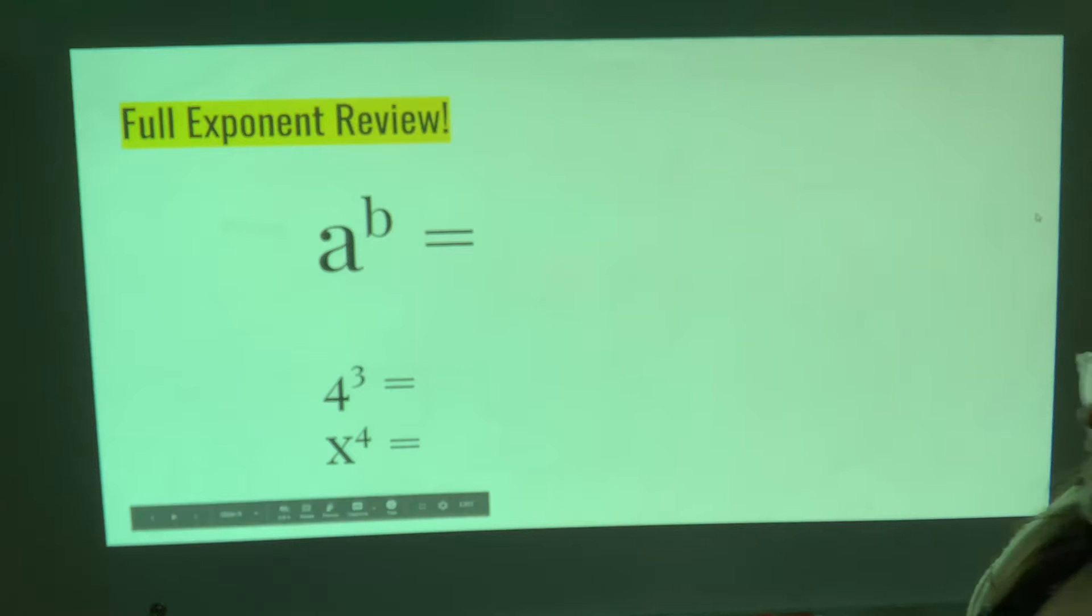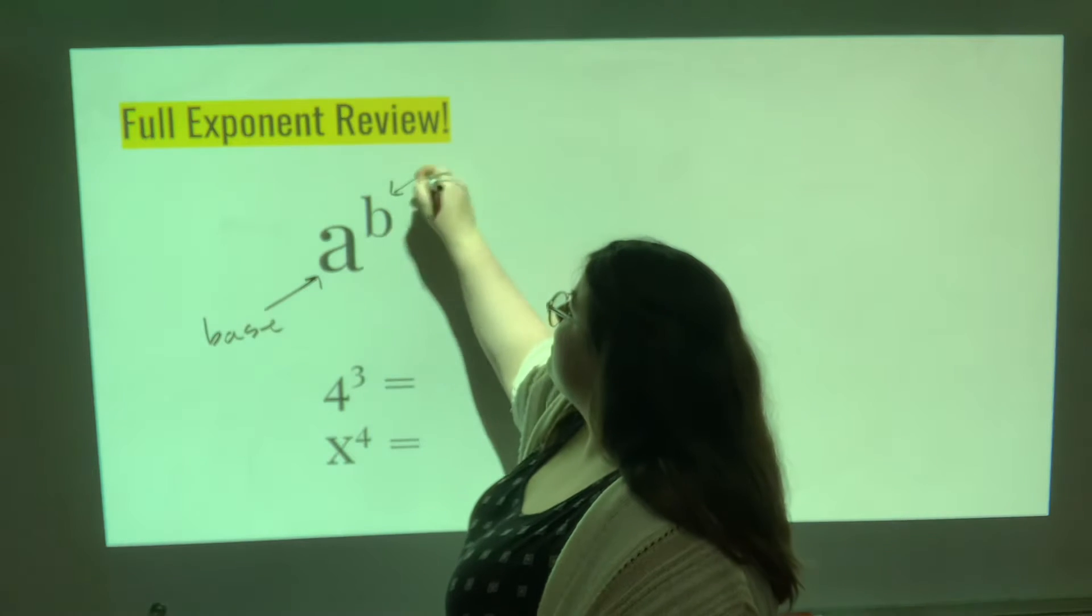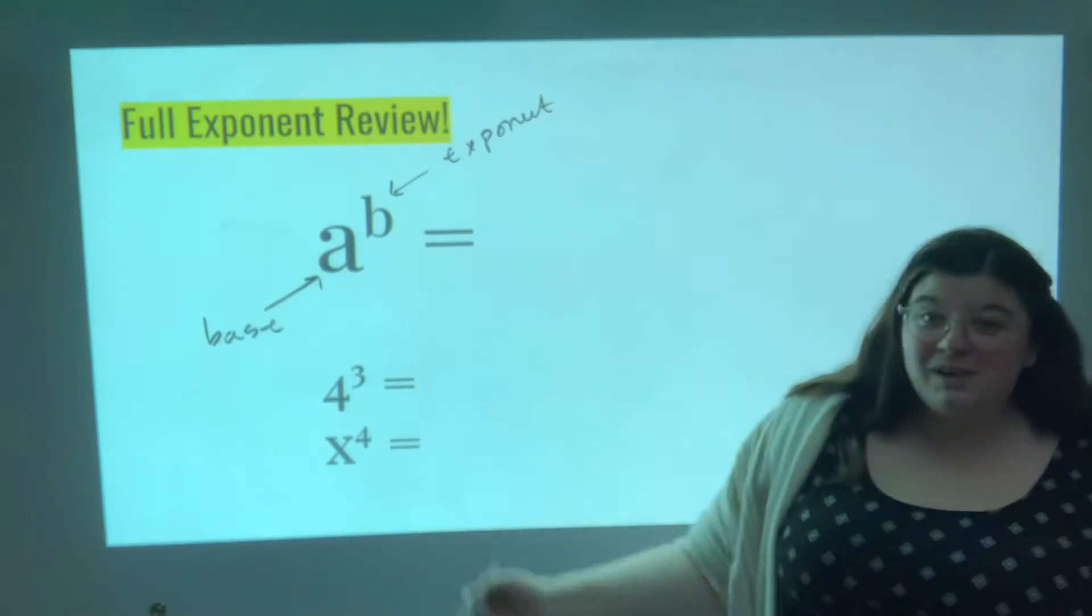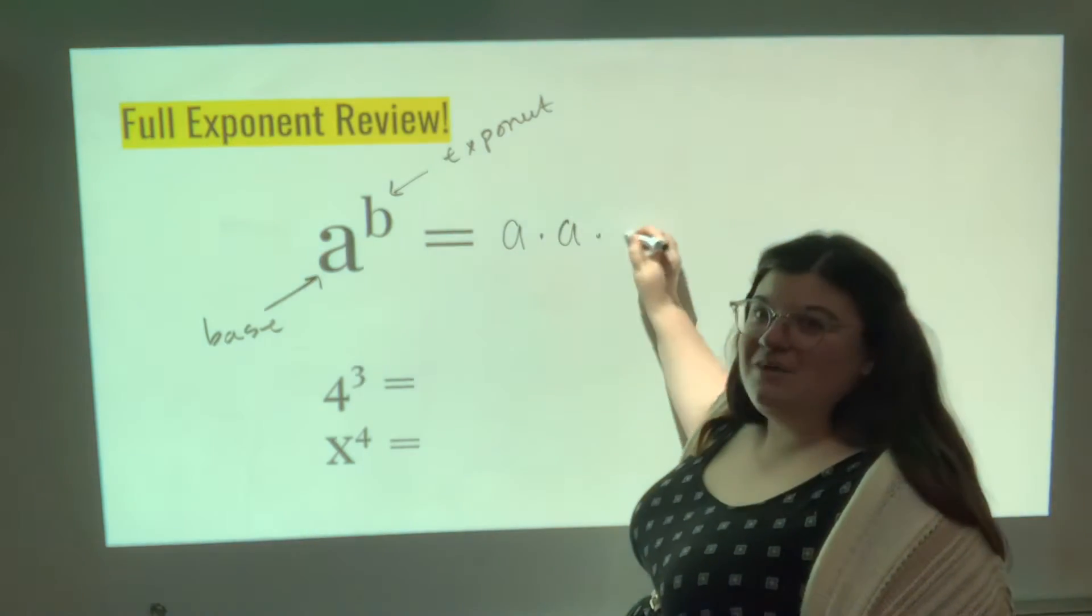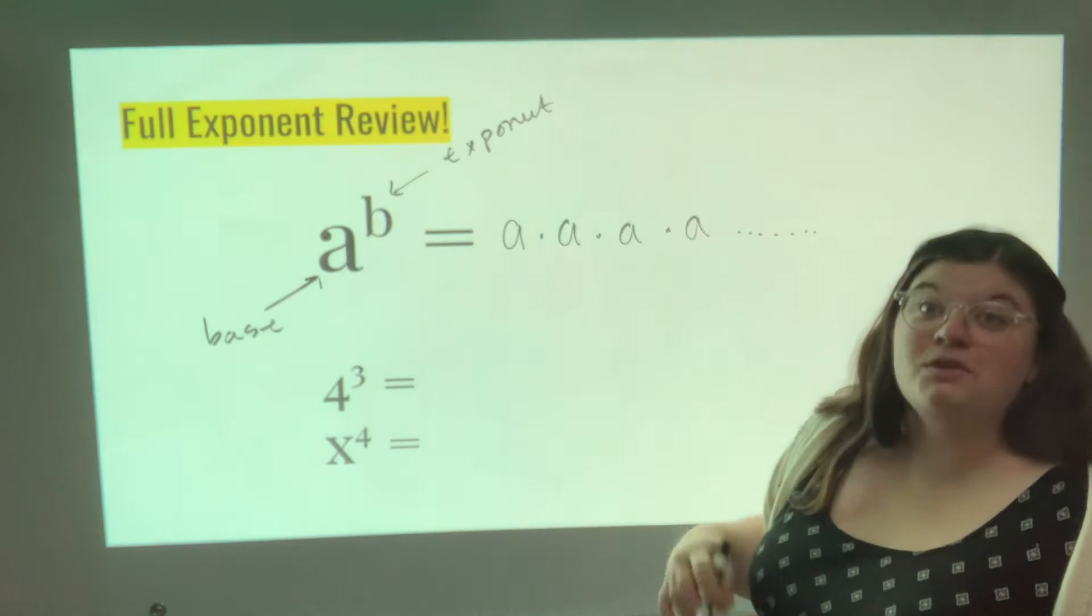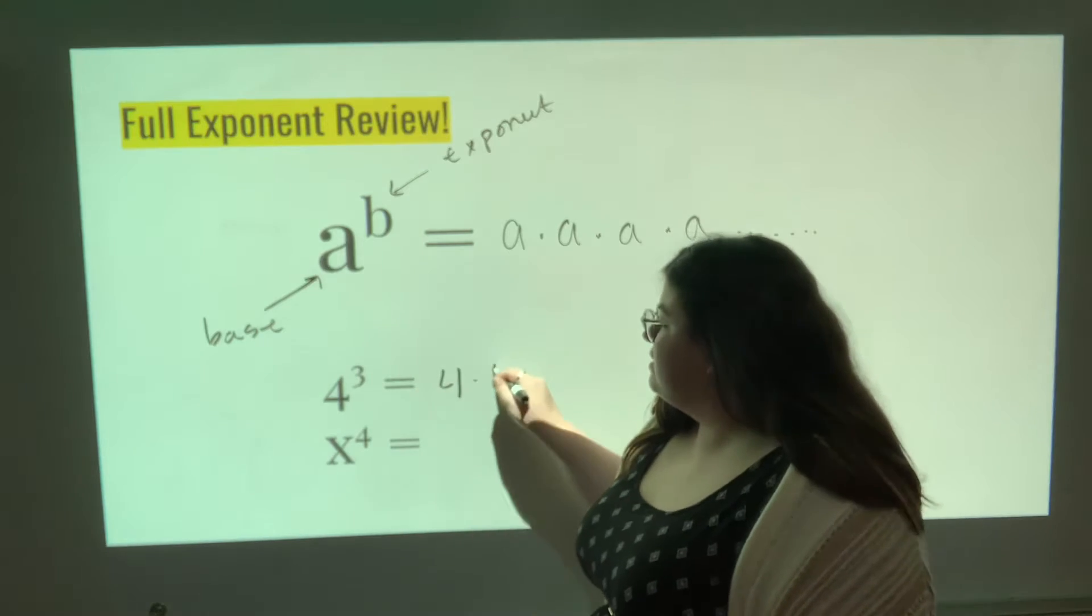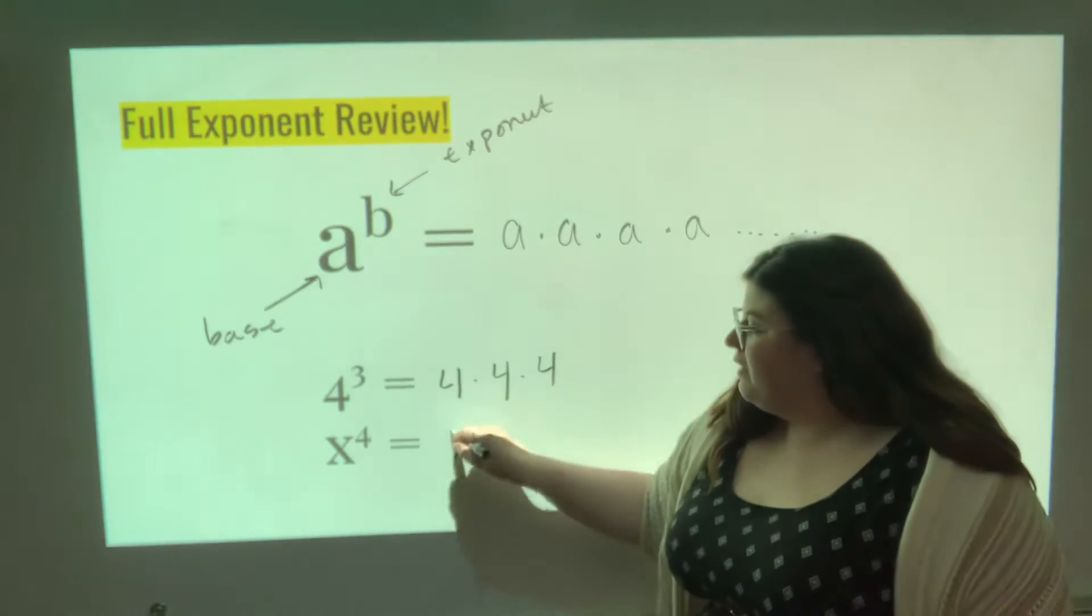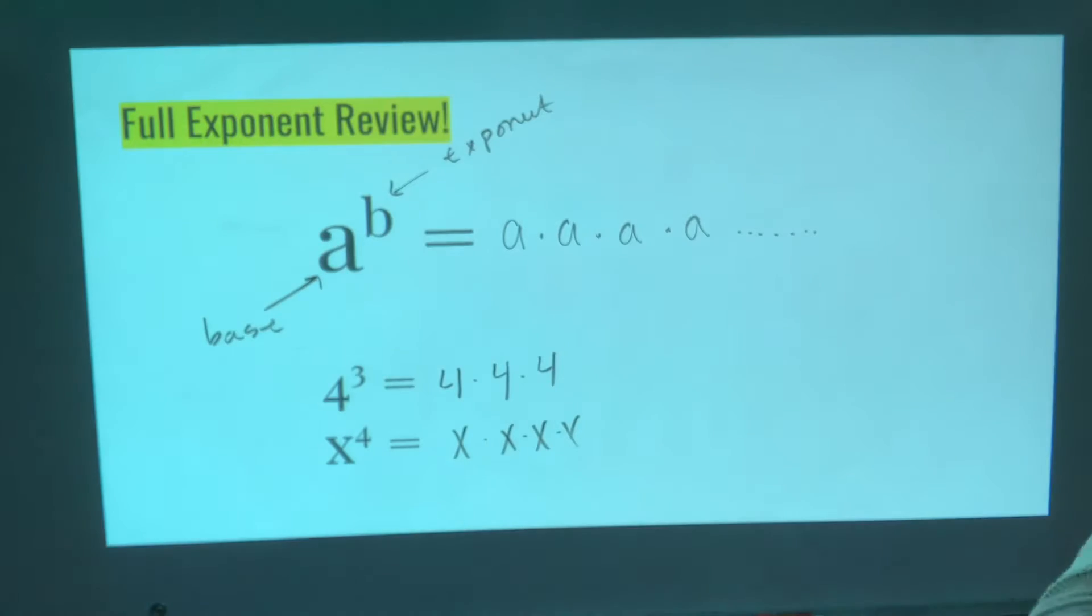Here's a quick exponent review. This is the base. This is the exponent. It tells you how many times to multiply that base. So a to the power of b is a times a times a times a, however many times b is. Maybe b is like 13, right? Then you multiply a 13 times. So 4 to the 3rd power is 4 times 4 times 4. You can multiply that all up later. x to the 4th power is x times x times x times x. All right, so that's just the basics of our exponents.